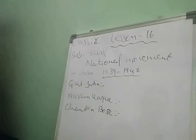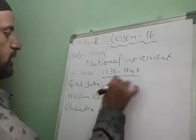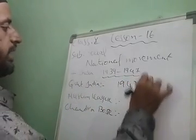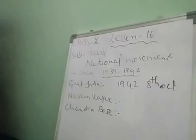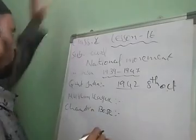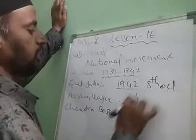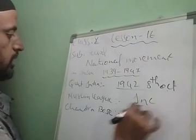One of those is the Quit India Movement. The Quit India Movement was started in the year 1942 on 8th August, when the All India National Congress came together. So on 8th August 1942, the Quit India Movement was started by the INC, that is the Indian National Congress leaders.